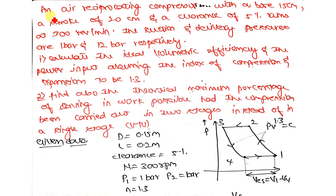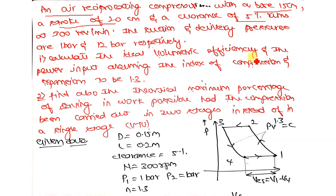The problem: a reciprocating air compressor with bore of 15 centimeters (diameter of the cylinder) and stroke of 20 centimeters (length of piston movement), clearance of 5 percent — in the previous problem it was 4 percent. It runs at a speed of 300 RPM. The suction and delivery pressures are 1 bar and 12 bar respectively, where 1 bar is p1 and 12 bar is p2.